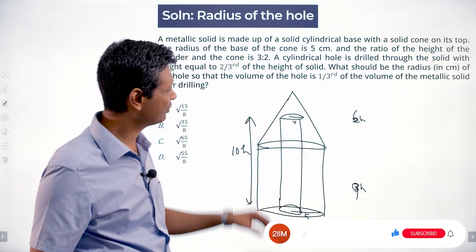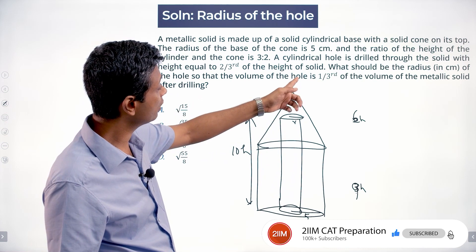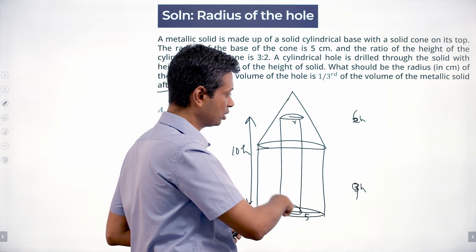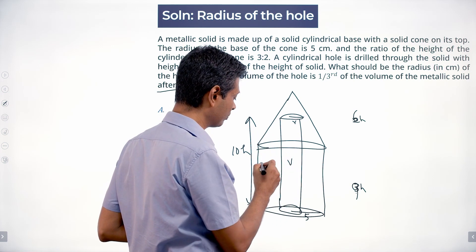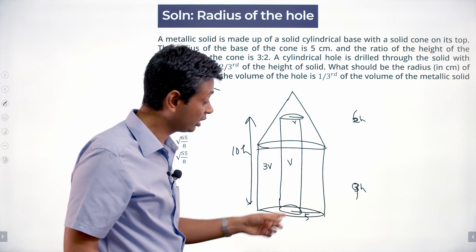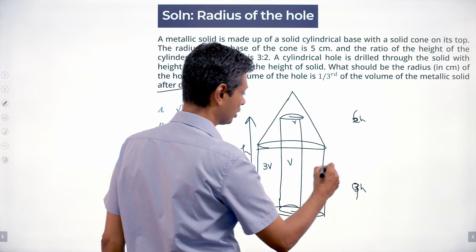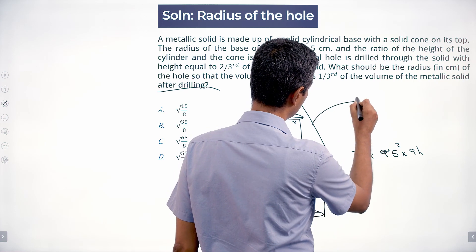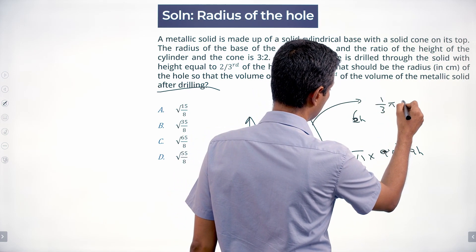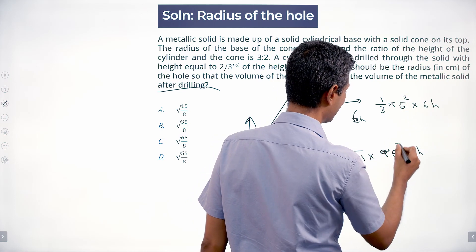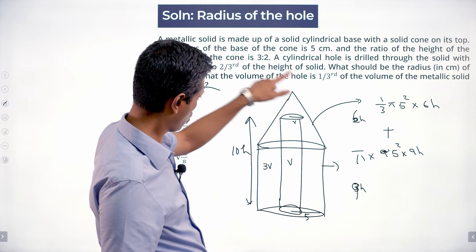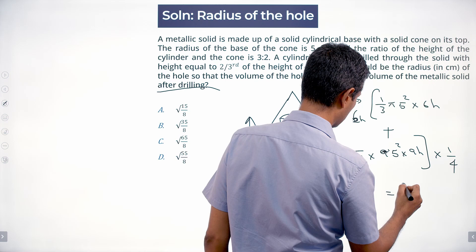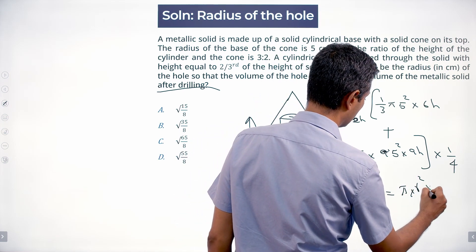The radius of the hole is unknown. After drilling, the volume of the hole is one-third of the remaining metallic solid. So if the hole's volume is v, the remaining volume is 3v, and the total original volume is 4v. Volume of cylinder = π × 5² × 9h. Volume of cone = (1/3) × π × 5² × 6h. Adding these gives the total volume = 4v. Dividing by 4 gives the hole volume = π × r² × 10h.